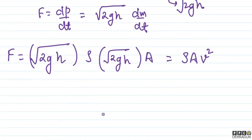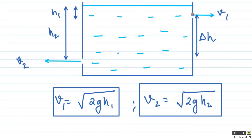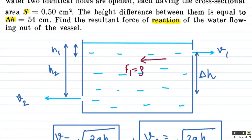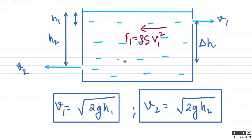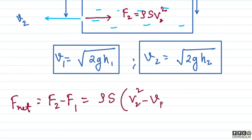So this force acts on the vessel because of the fluid flowing out through the hole. The upper right-side hole exerts a force on the vessel towards the left: F1 = ρ × S × v1². The lower left-side hole exerts a force to the right: F2 = ρ × S × v2². So the net force is F_net = F2 − F1, directed towards the right, which equals ρS(v2² − v1²).